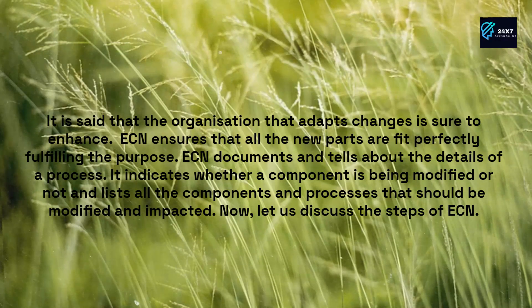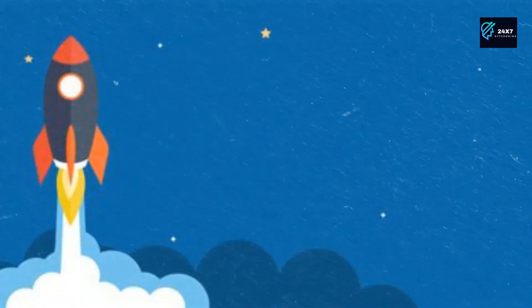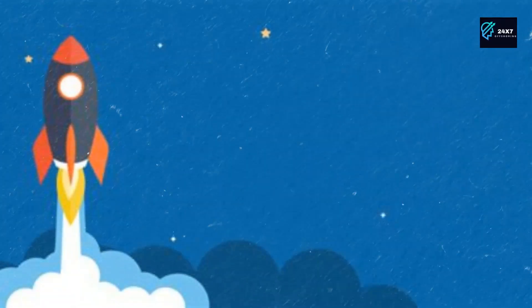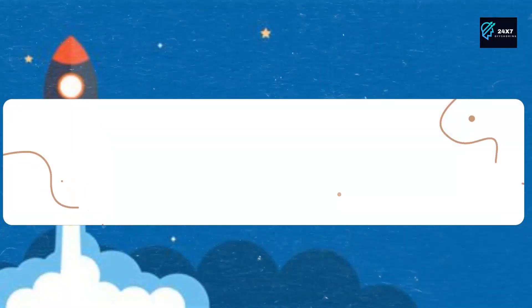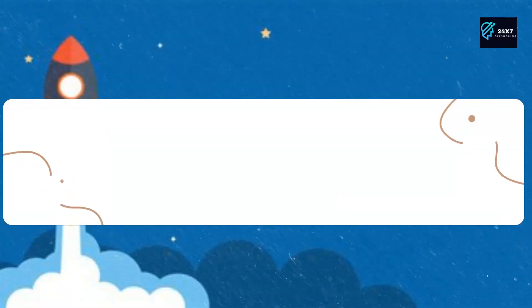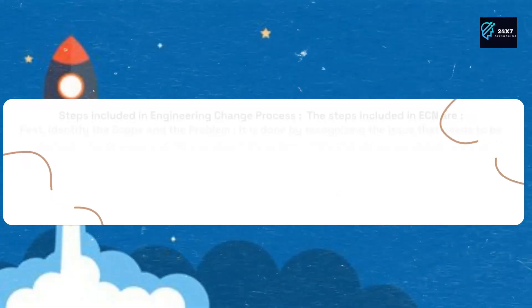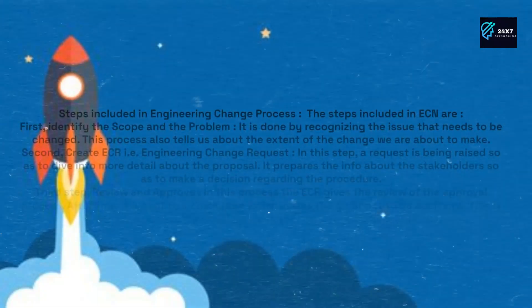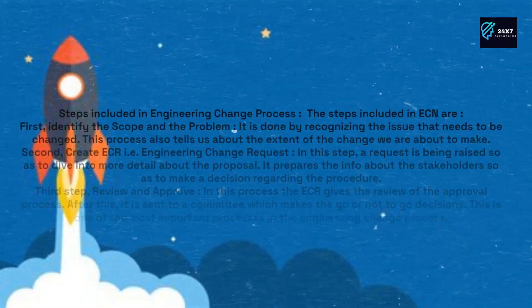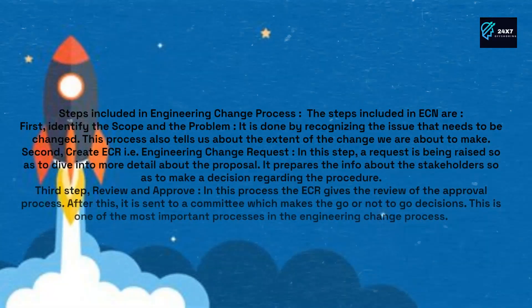Let us discuss the steps of ECN. The first step is to identify the scope and the problem. It is done by recognizing the issue that needs to be changed. This process also tells us about the extent of the change we are about to make.